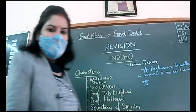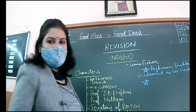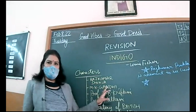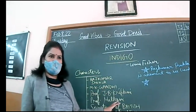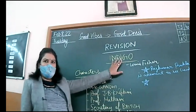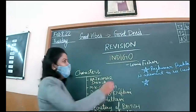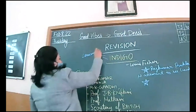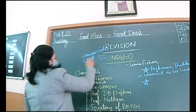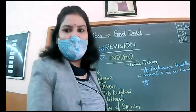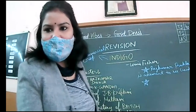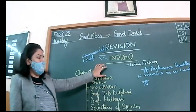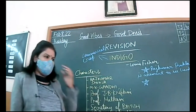Good morning to all the students of class plus two. Today we will revise chapter Indigo — a very prominent chapter based on true facts. What is indigo? It is a commercial crop used for the purpose of dye, coloring, and all. That is why the name of the chapter is Indigo, because the whole chapter revolves around this crop.